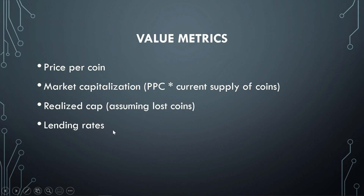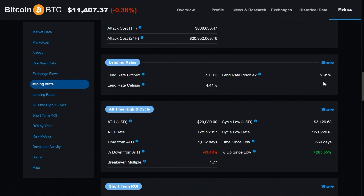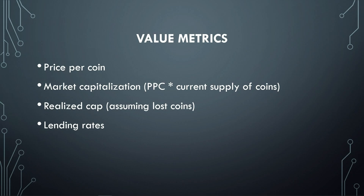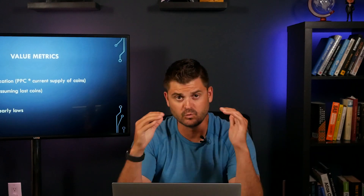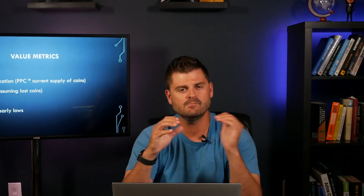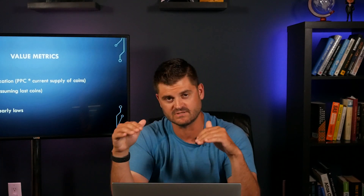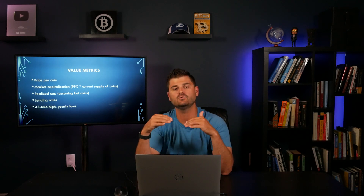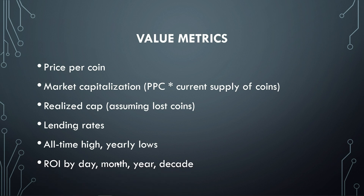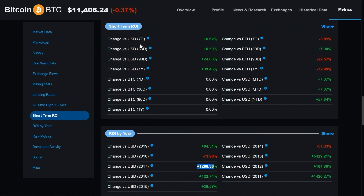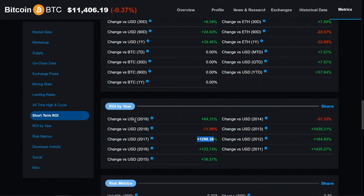The next metric we look at is lending rates — a snapshot of different lending rates across different exchanges. Other key value metrics include the current all-time high and yearly lows. Bitcoin's price is really volatile with massive swings, and looking at yearly lows has historically been a good place to accumulate Bitcoin. You can also look at return on investment by day, month, year, and decade — from a week and a month all the way up to individual years.